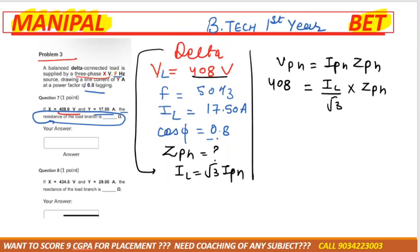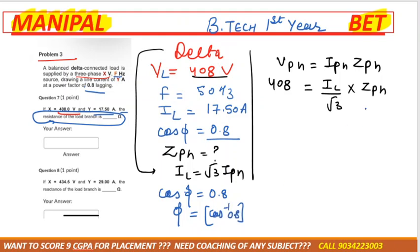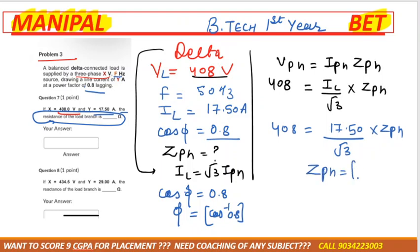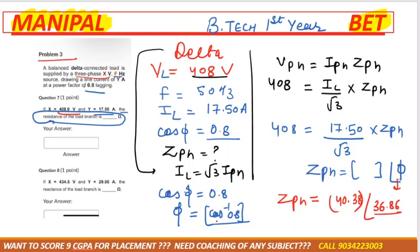Since cos φ = 0.8, we get φ = cos⁻¹(0.8) = 36.8°. Substituting 408 = (17.50 / root 3) × ZPH, we can get the magnitude of ZPH. The angle is φ = 36.8°. After solving, ZPH = 40.38 at angle 36.8°.